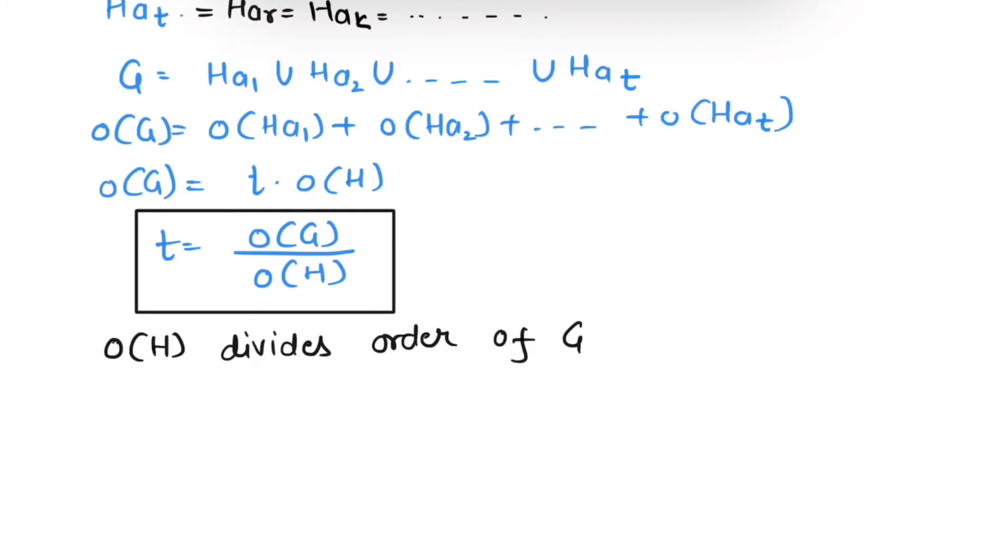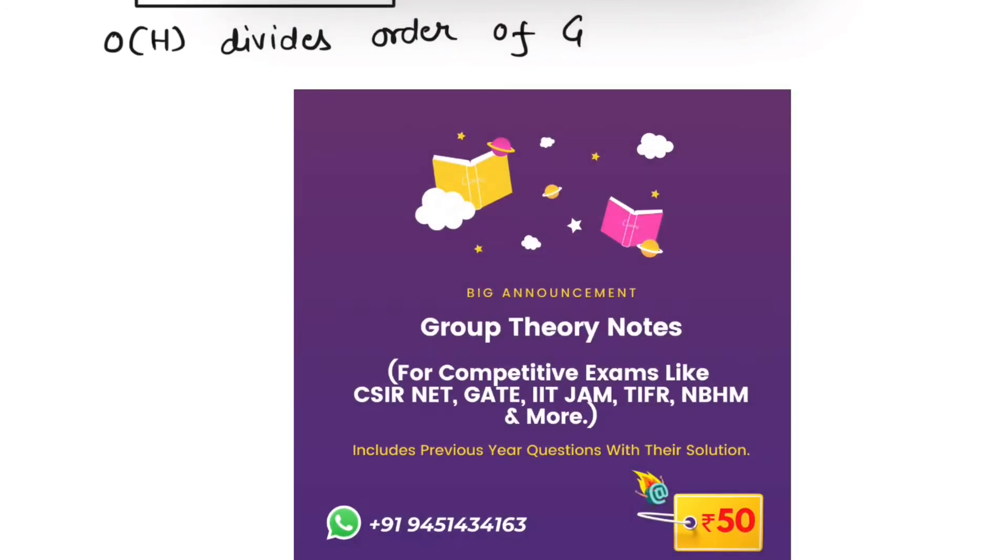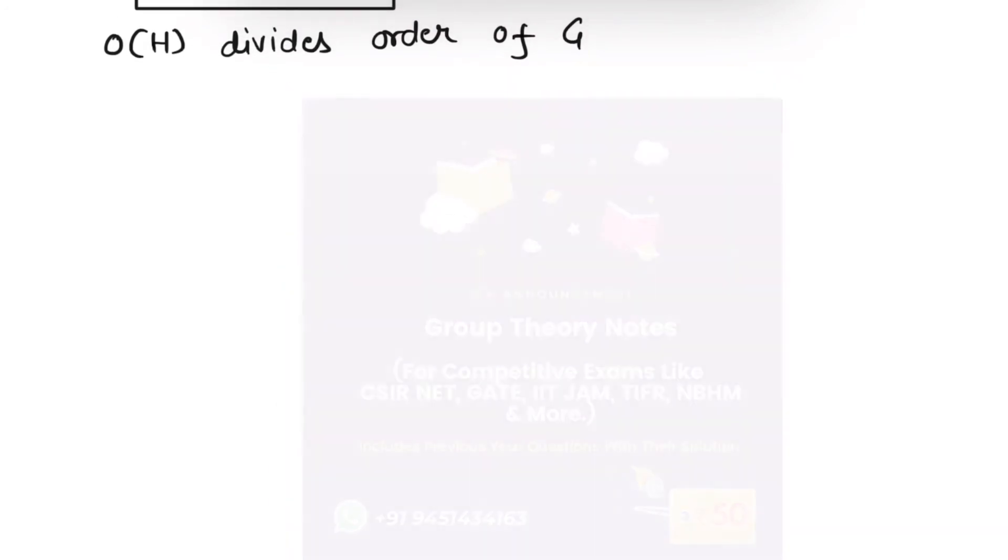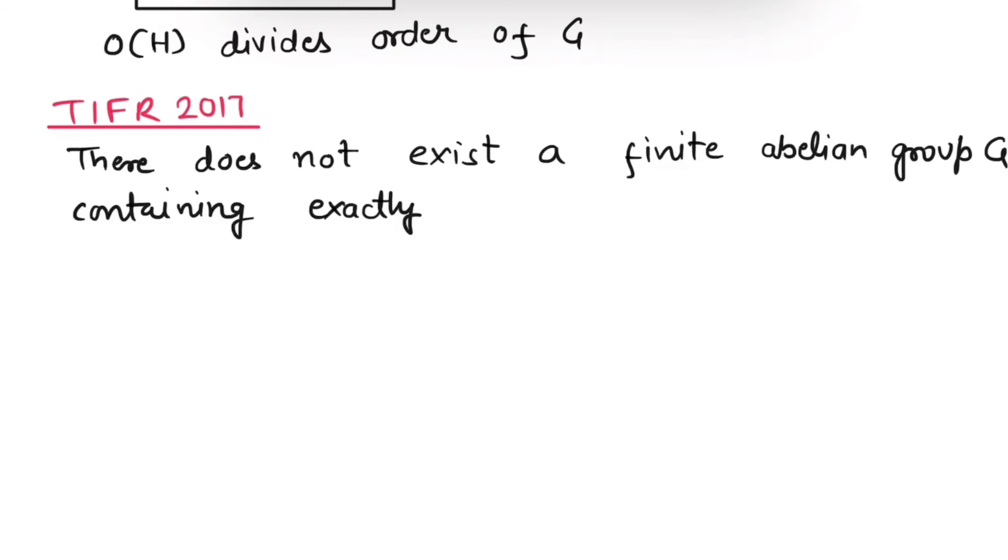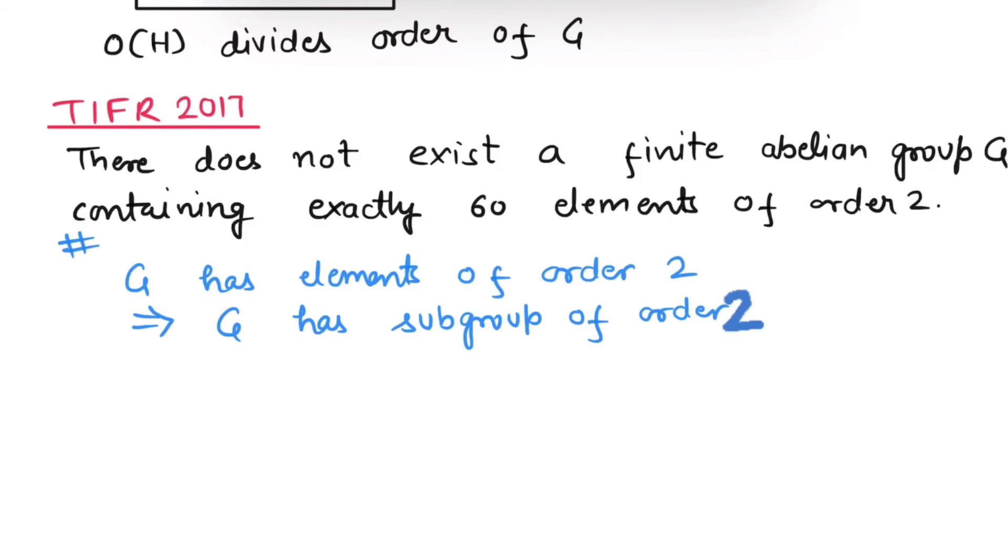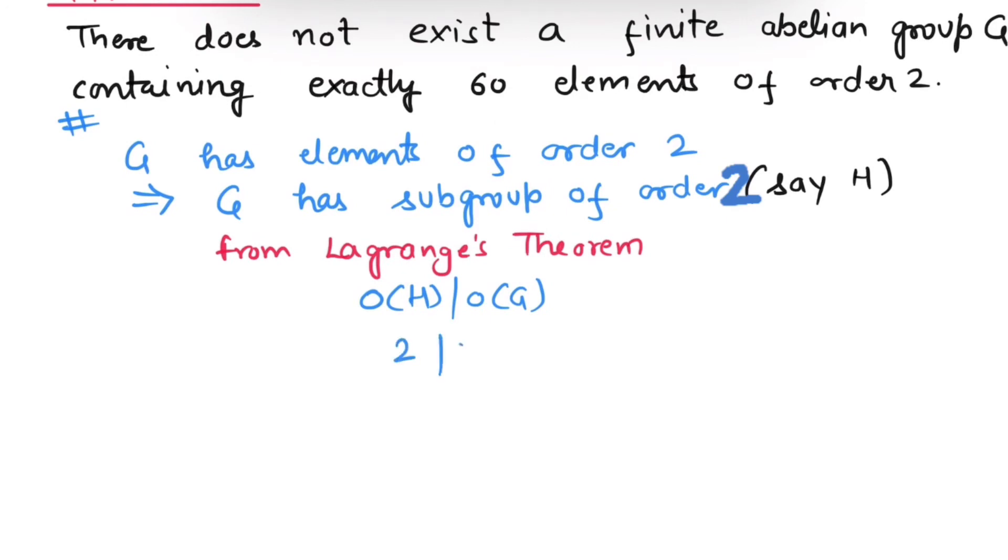Now let's do a problem based on this concept. The question is: there does not exist a finite abelian group G containing exactly 60 elements of order 2. Let's solve it. It is given that G has elements of order 2, which implies G has a subgroup of order 2, say that subgroup is H. Then from Lagrange's theorem, order of H divides order of G. Since order of H is 2, we have 2 divides order of G, so we can conclude order of G is even.